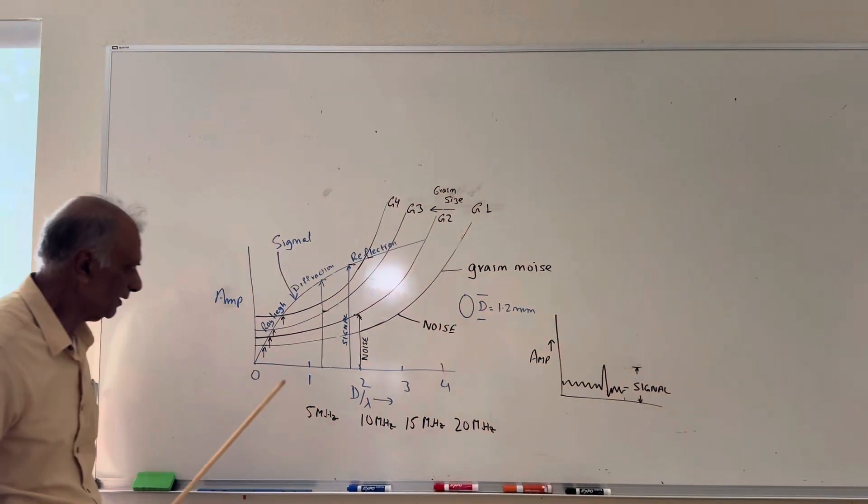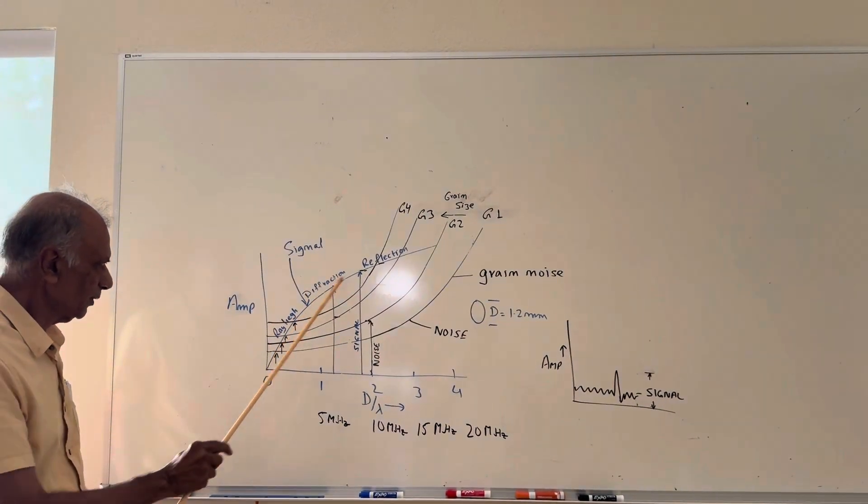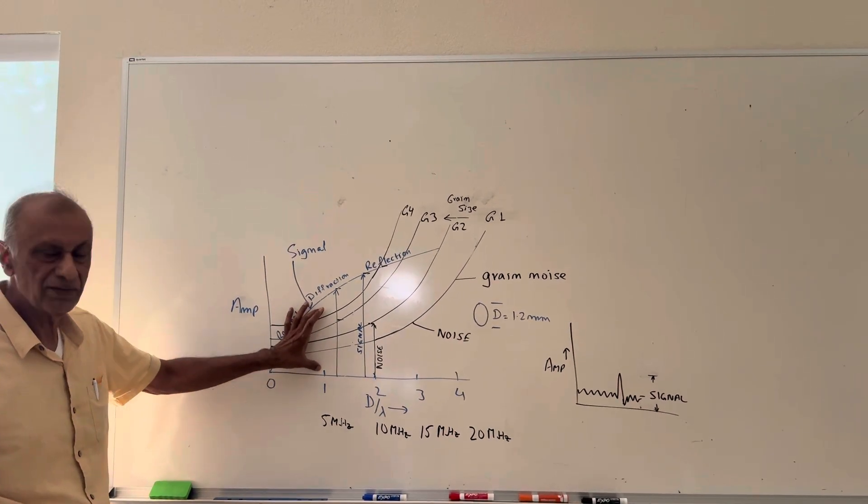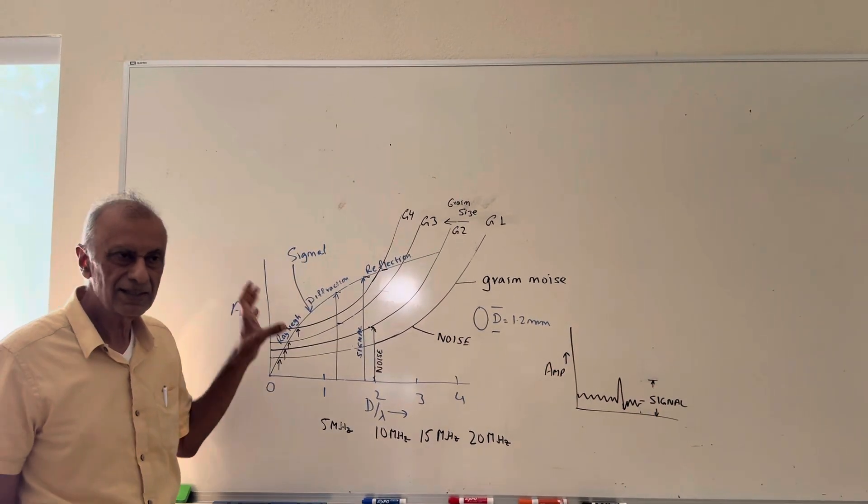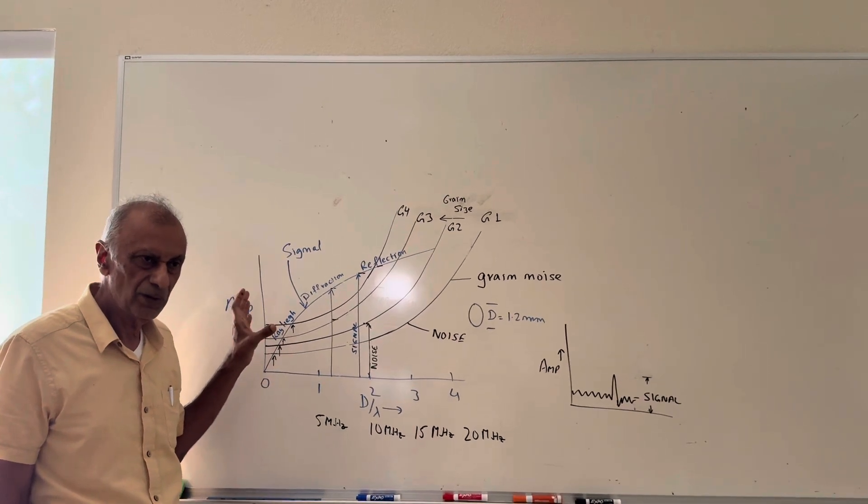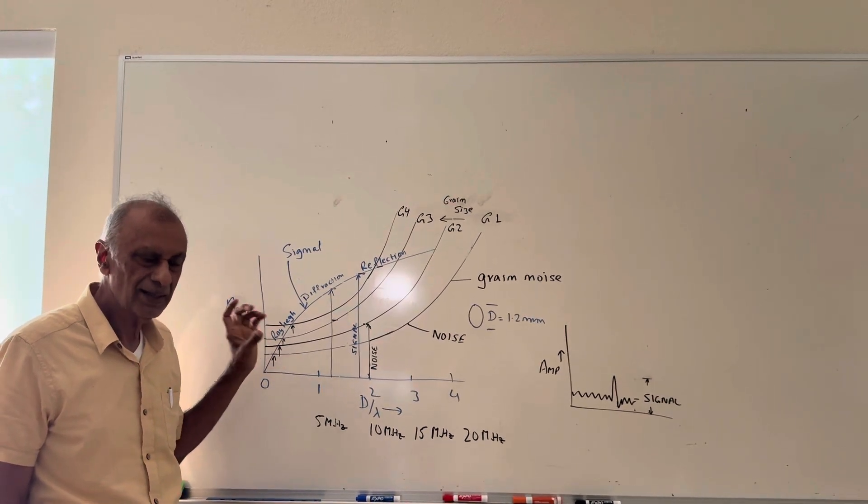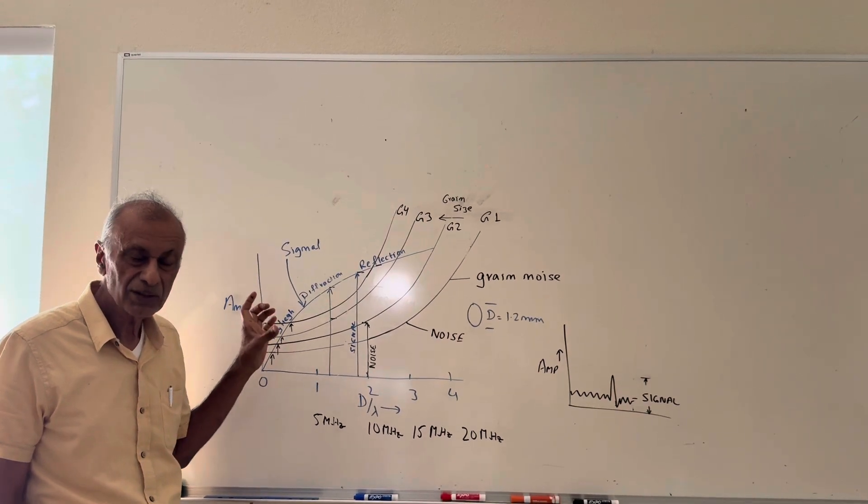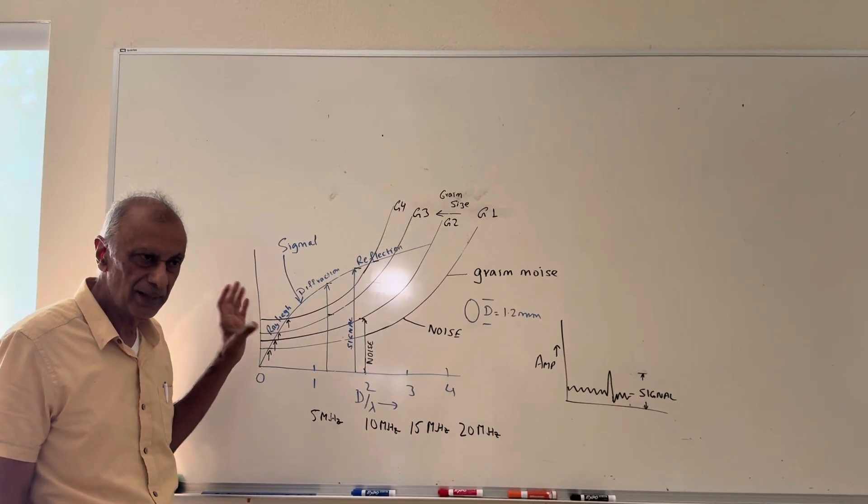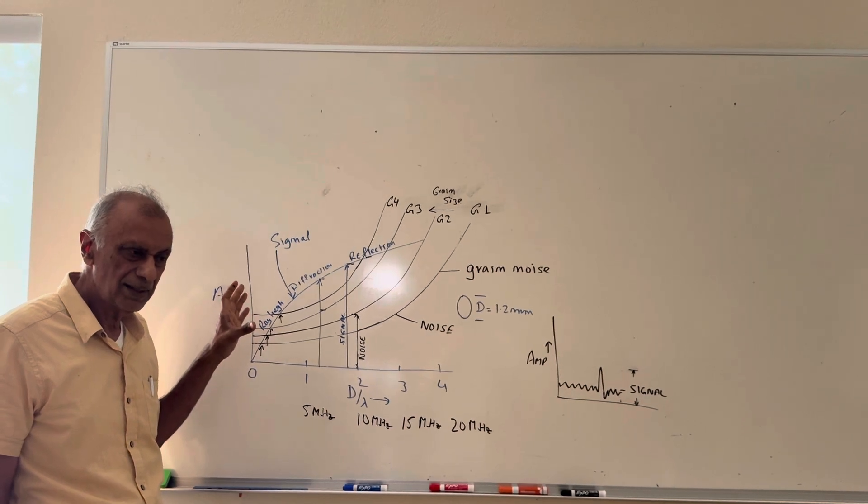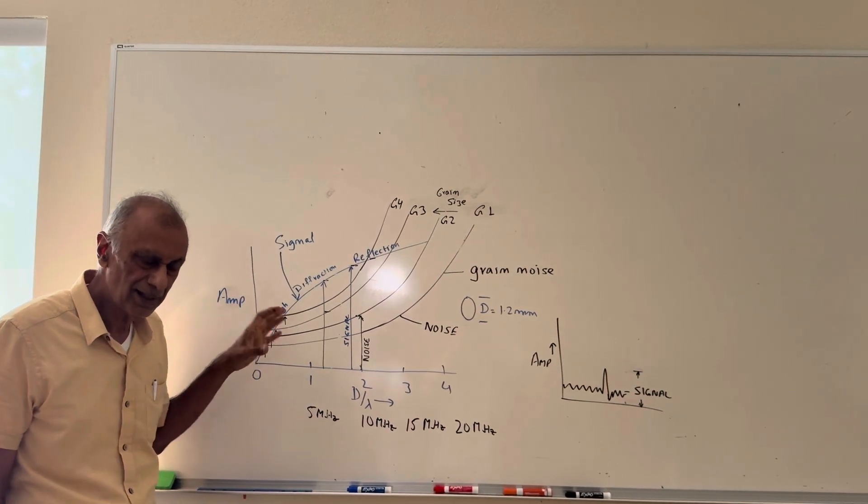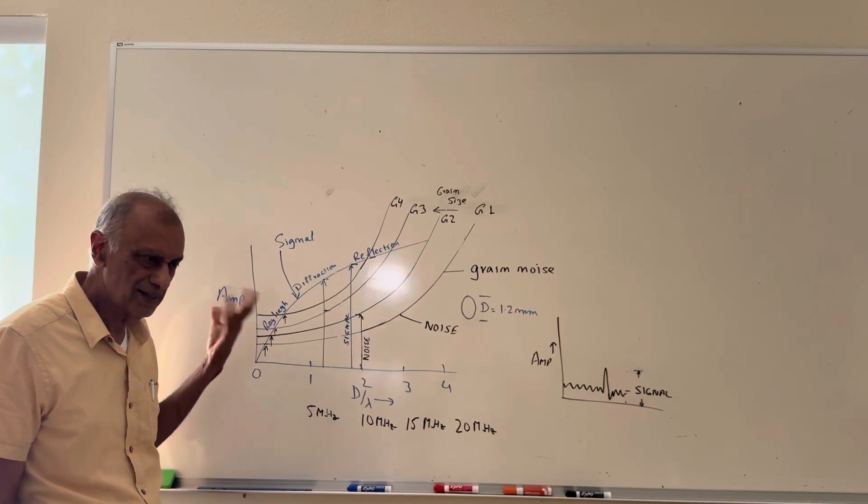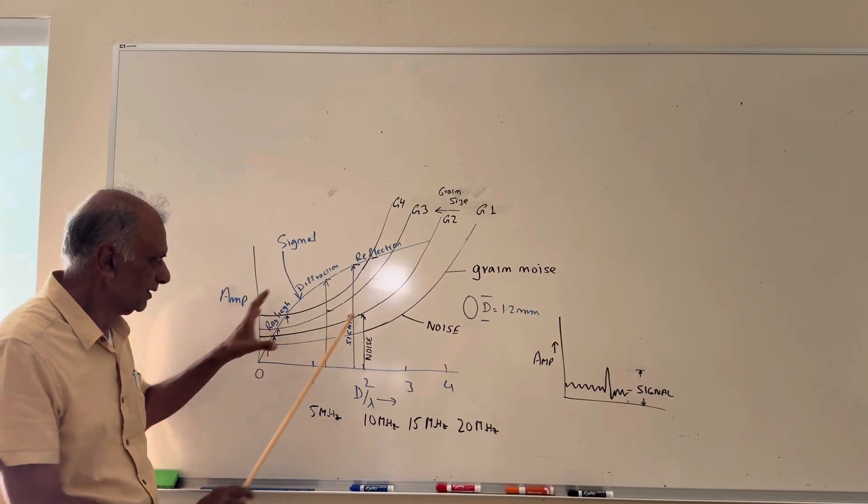So here, the blue line is the signal, and the black lines are the noise levels. Now, why do I have multiple black lines? These lines are representative of the grain noise, and the grain noise actually depends on the size of the grain. As the size of the grain increases, the grain noise actually increases, and it doesn't increase linearly—it actually increases to the second or third power of the grain size.